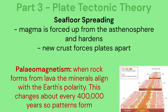Seafloor spreading occurs where magma is forced up from the asthenosphere and hardens. The new crust forces plates apart. A key term to understand is paleomagnetism: when rock forms from lava, the minerals align with the earth's polarity. This changes about every 400,000 years, so patterns form.